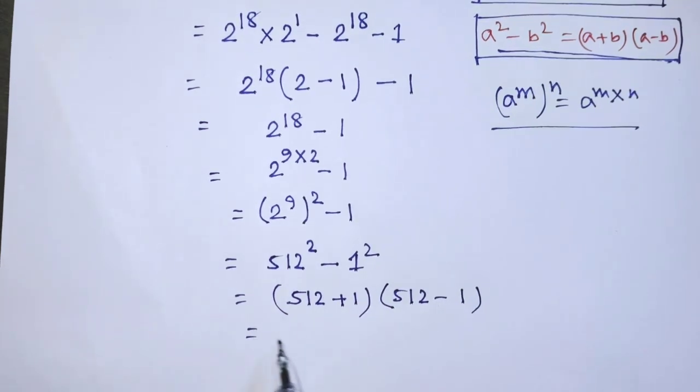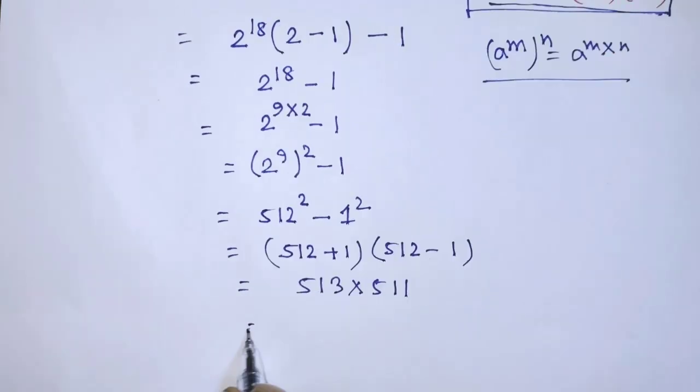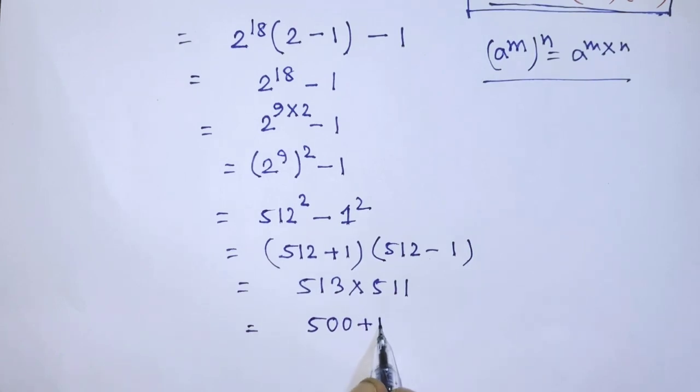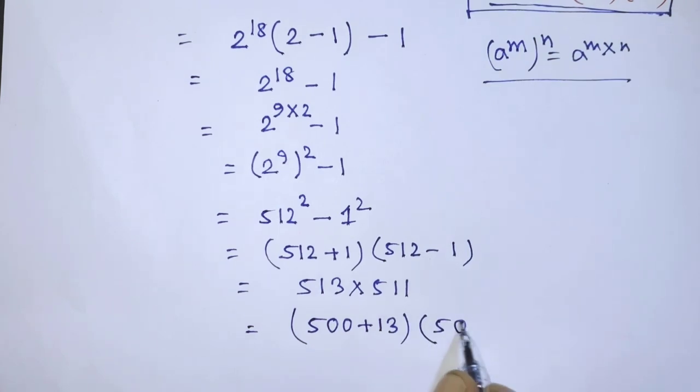Then it will be 513 times 511. In the place of 513, we can write 500 plus 13. Similarly, it will be 500 plus 11.